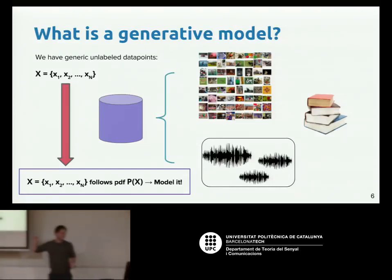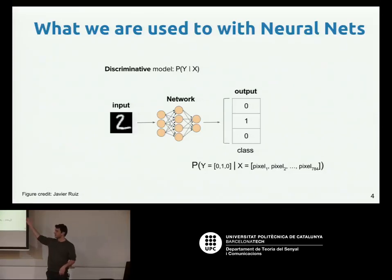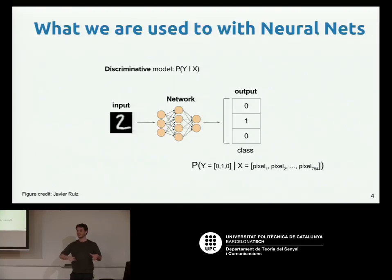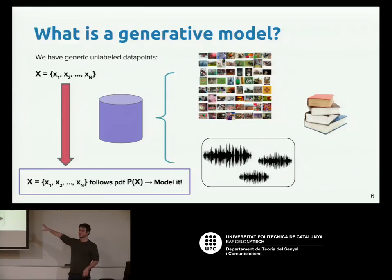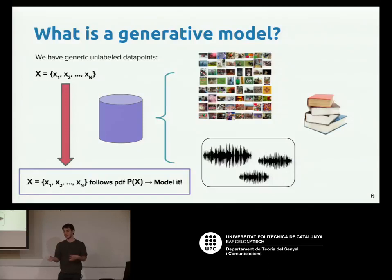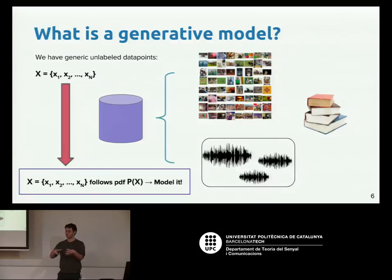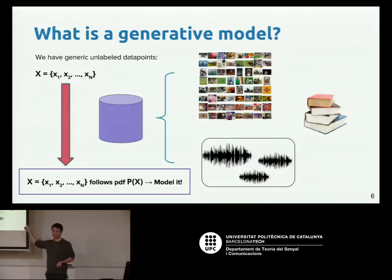Rather than saying 'I want some discrimination of a label given input x,' I want to know how x was generated and mimic that. Once I've learned enough from unsupervised data — just a bunch of images with no labels — the model learns to compose the distribution such that I can sample new images from it. It's not memorizing; it's learning how to generate new stuff similar to what it has seen.